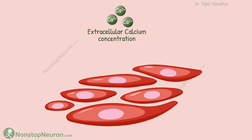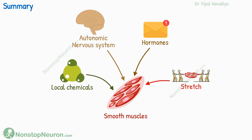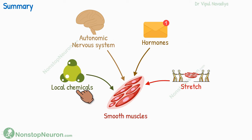Although not a control mechanism in itself, it's worth mentioning extracellular calcium here. Calcium plays a crucial role in smooth muscle contraction, so a significant decrease in extracellular fluid calcium concentration can impair the ability of smooth muscles to contract effectively. As a quick recap, the activities of various smooth muscles in our body are controlled by the autonomic nervous system, hormones, local chemical changes, and mechanical stimulation such as stretch.